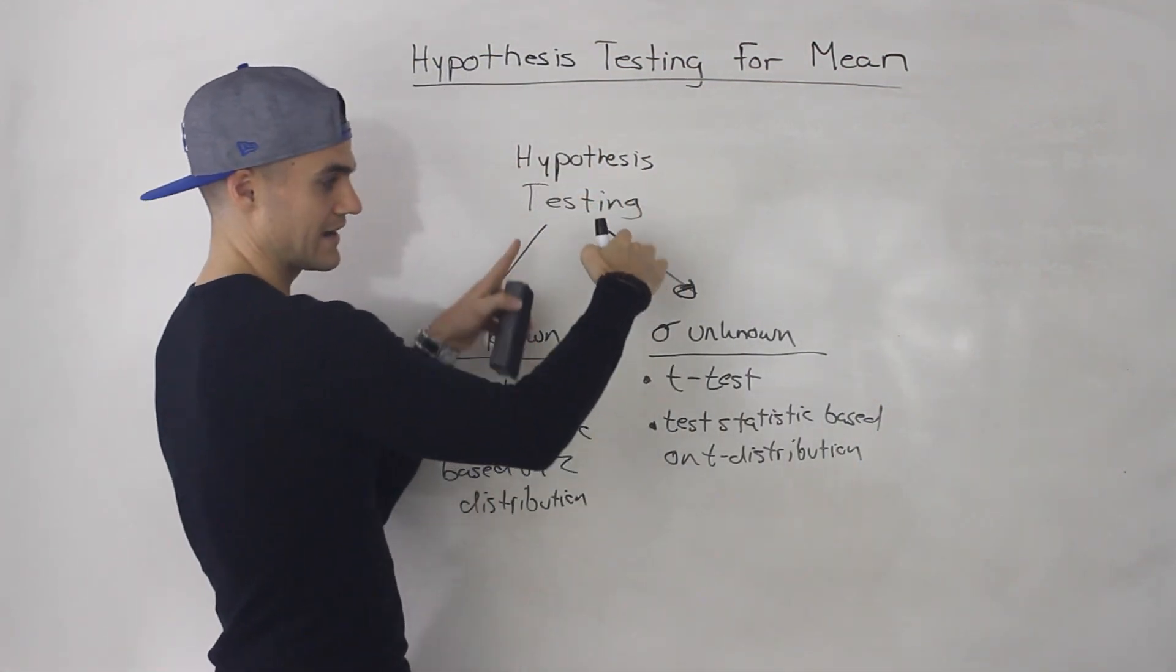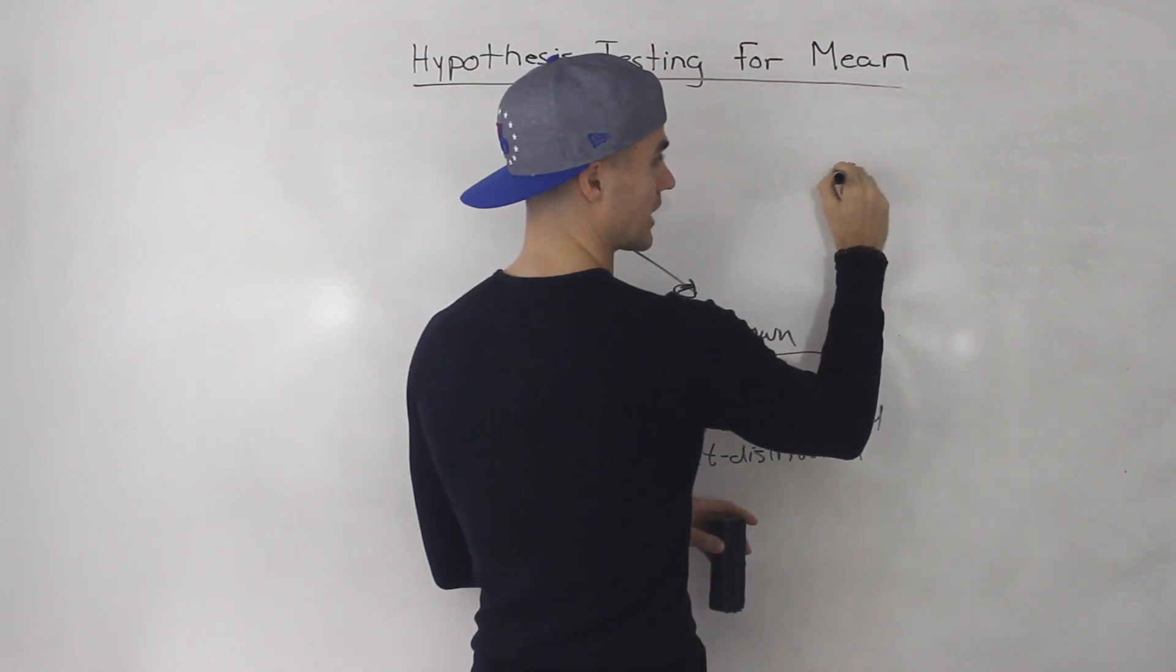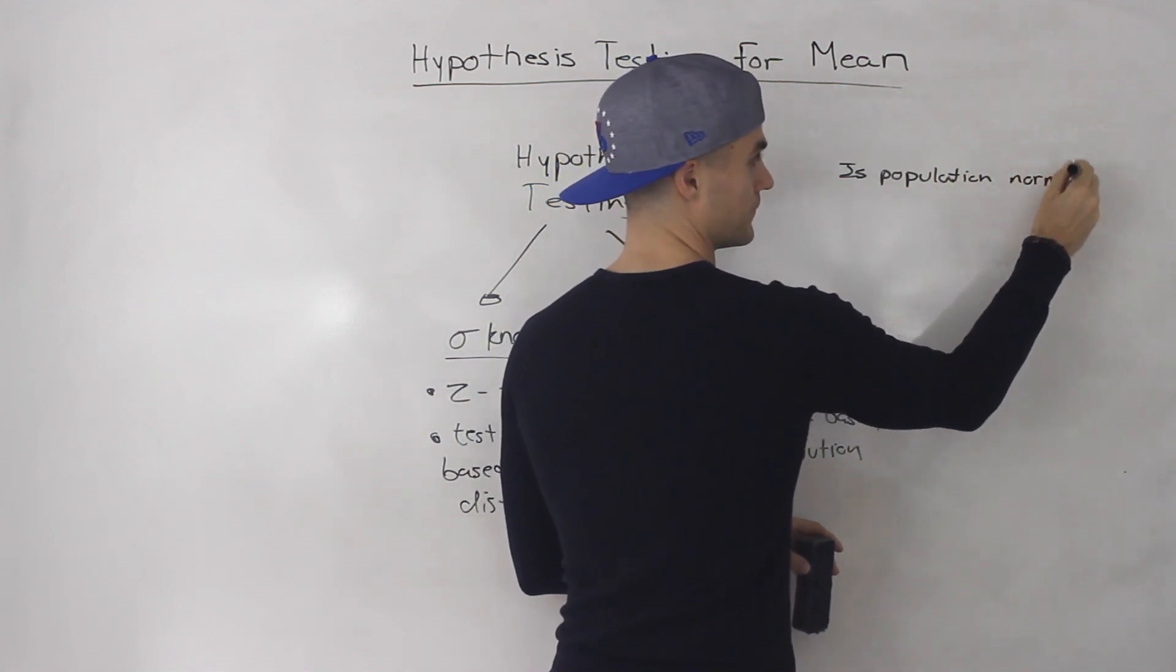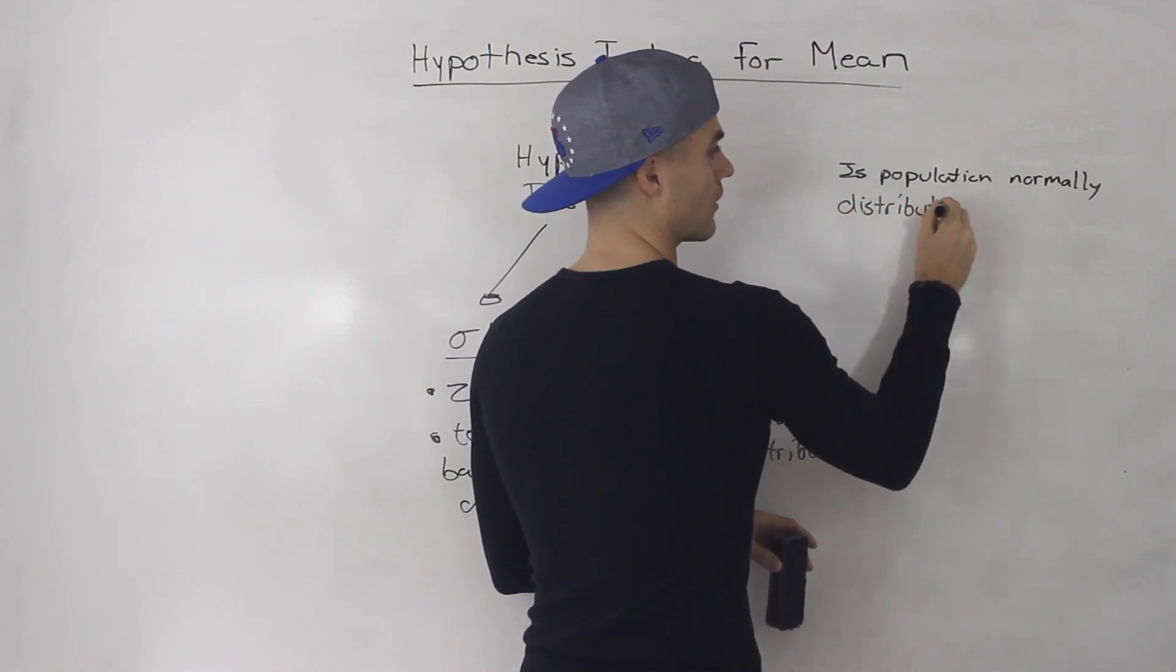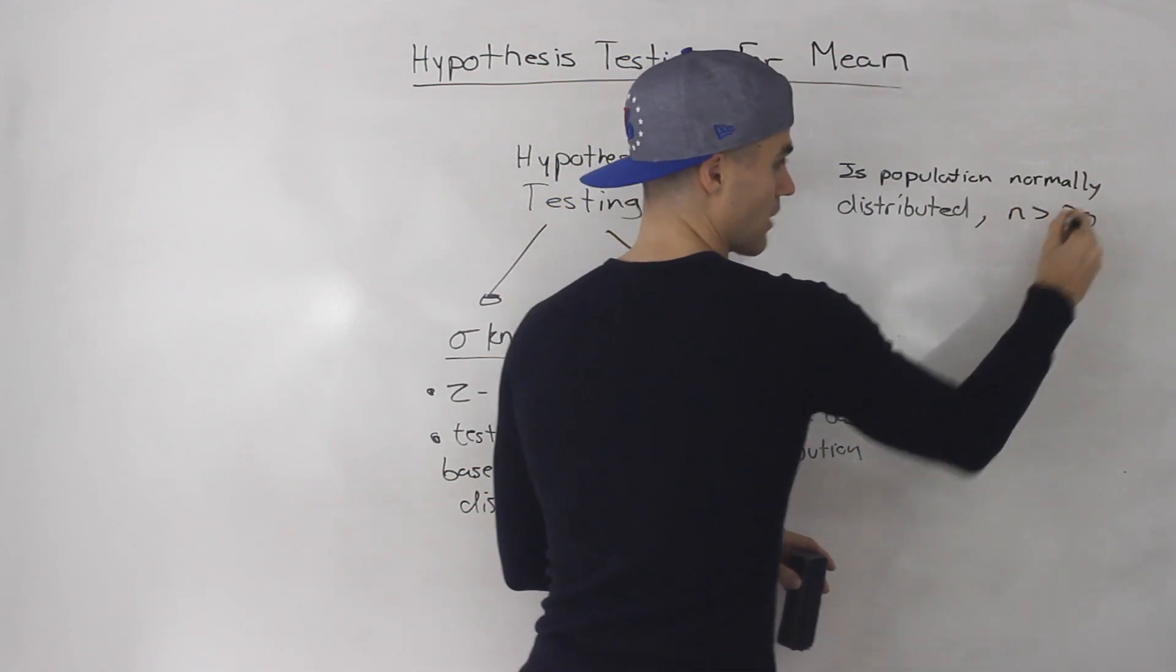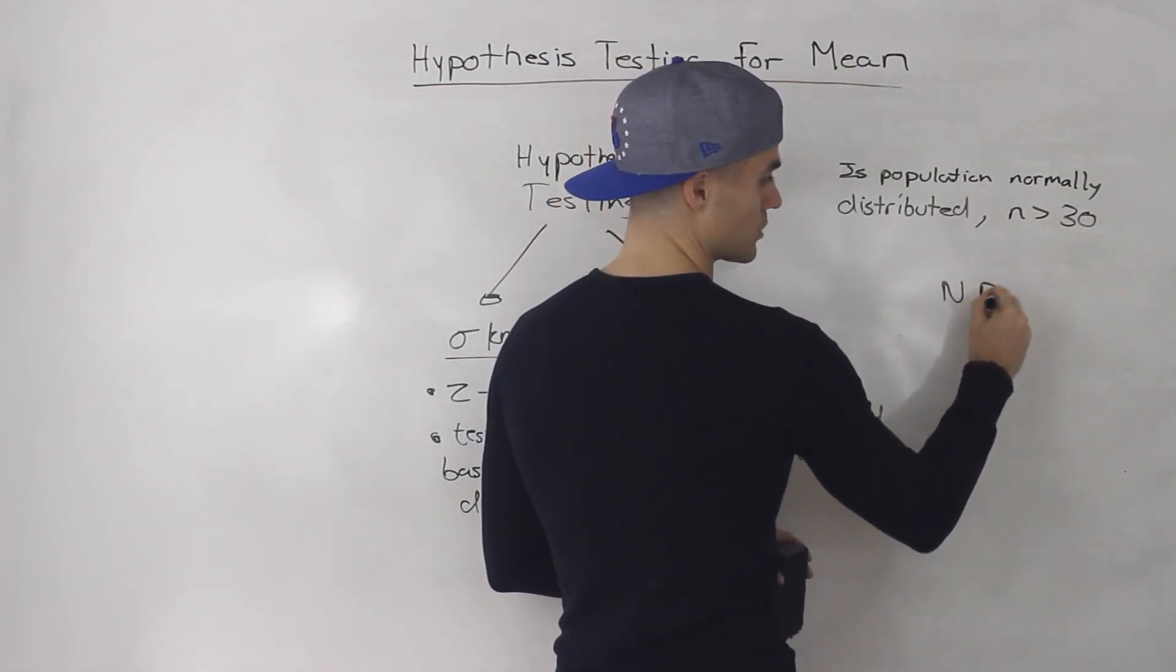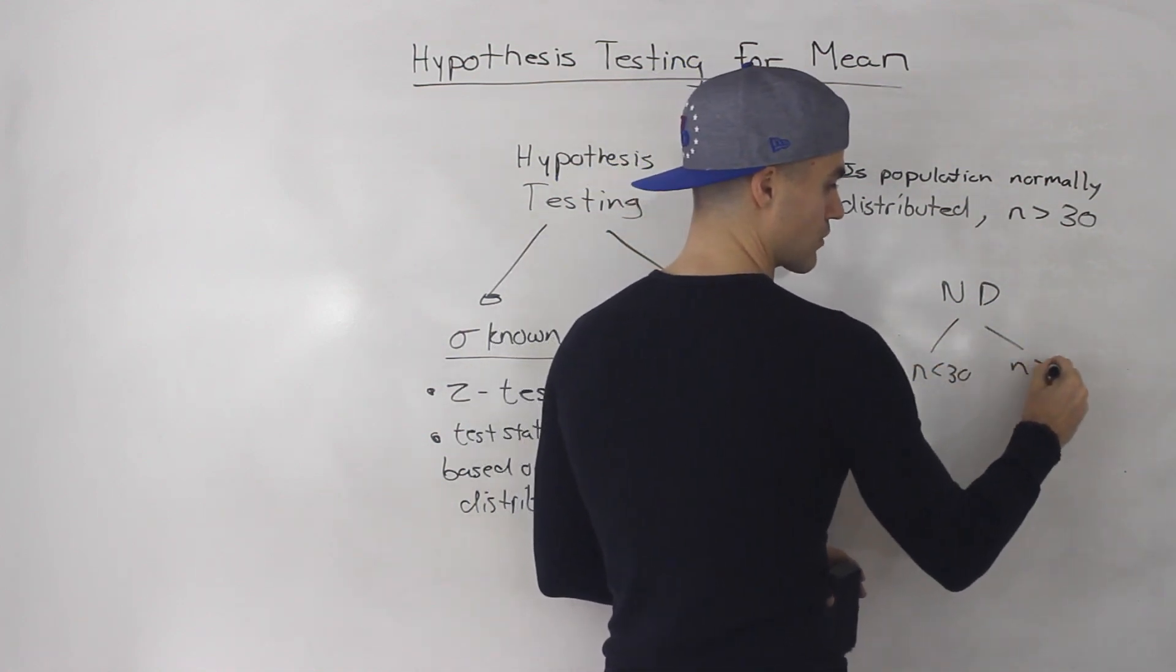Now, one thing I want to mention is that there may be another preliminary step here, depending on your prof, depending on your textbook. Basically, sometimes before even getting to this decision, there may be something like you got to check is the population normally distributed, for example, or another checkpoint might be is the sample size greater than 30. And sometimes these would even be split up. So you'll have like is the population normally distributed? And then from there is the sample size less than 30 or is it greater than 30?